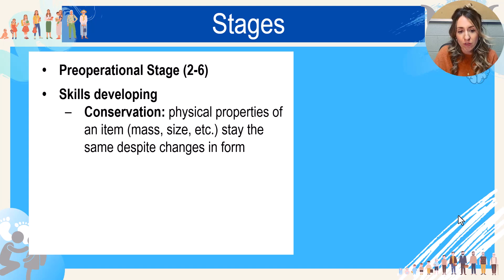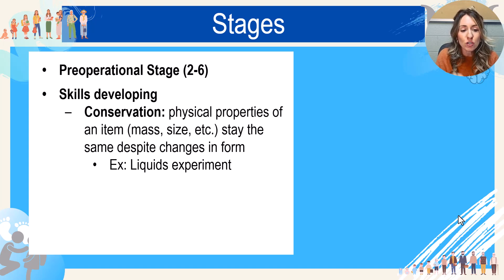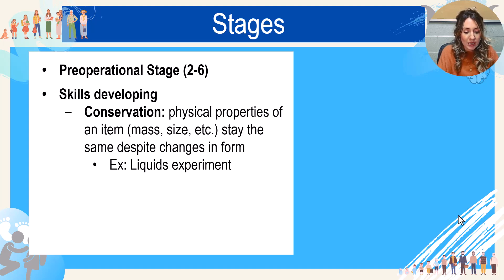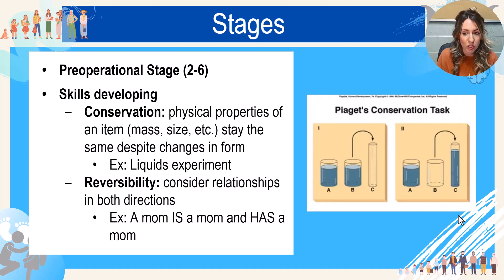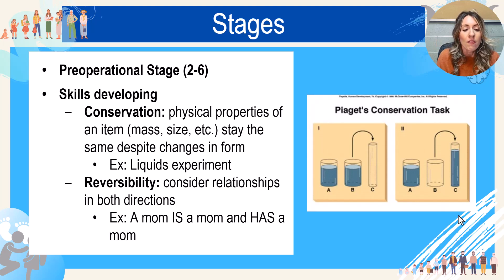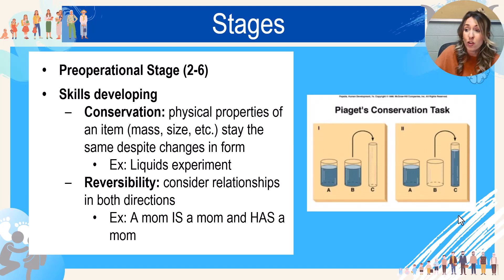Two very specific skills that pre-operational toddlers lack are conservation and reversibility. Conservation is the understanding that a physical property of an item — like its mass or volume — stays the same despite changes in form. The famous example is the liquids experiment: two cups filled with the same amount, then one is poured into a tall skinny cup, and the child says the tall skinny one has more. They don't understand that the amount actually stays the same and it's the container that changed. They also have a hard time with reversible relationships: they understand that they have a mom, but the fact that their mom also has a mom — that their grandma is also a mom — can be very difficult for them to understand.